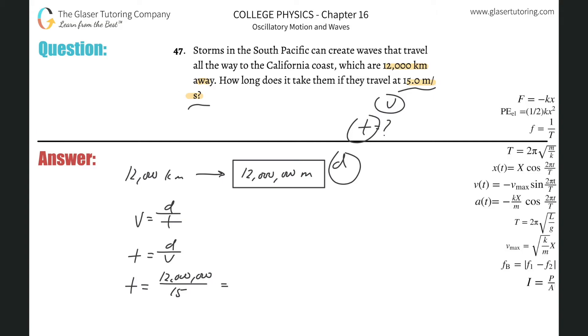And what does that work out to be? So 12 million divided by 15, and that works out to about 8.00 times 10 to the 5 seconds. Right, and this is good. That's an answer if you need that in terms of days.